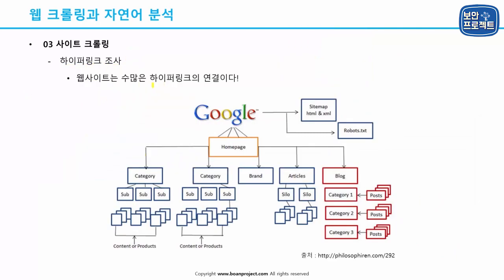웹사이트는 사실 이 하이퍼링크 연결이거든요. 구글이라는 사이트가 이런 링크들을 많이 제공하는데, 구글이 자기가 크롤링했던 것을 링크로 갖고 있다가 우리가 검색하는 순간에 적합한 결과를 링크와 함께 제공해 줍니다. 우리는 모든 서버에 일일이 접속하는 게 아니라 구글이나 네이버에서 나온 링크를 통해서 다음 페이지로 들어가게 되는 거죠.